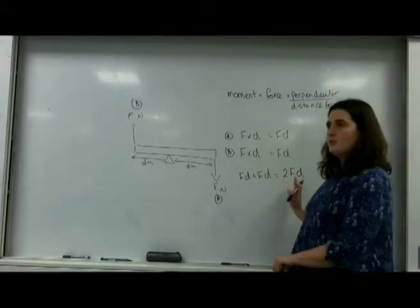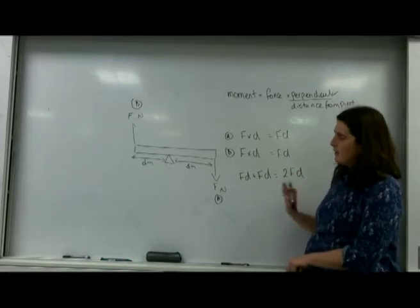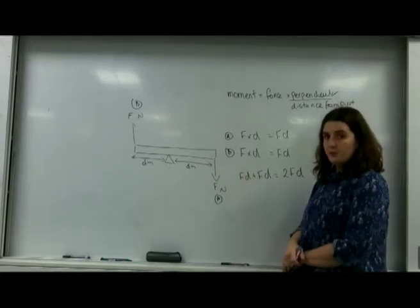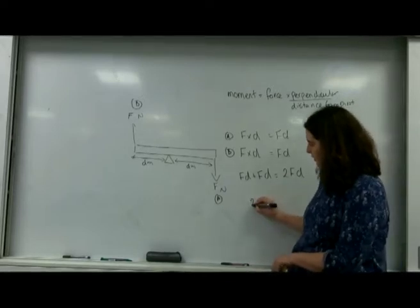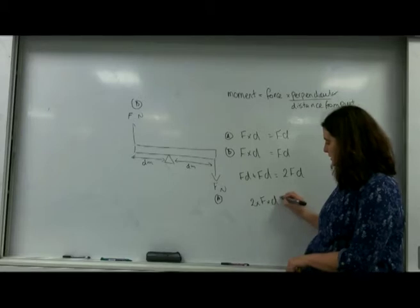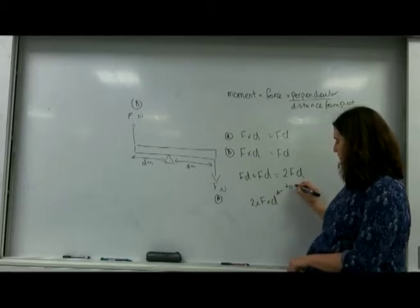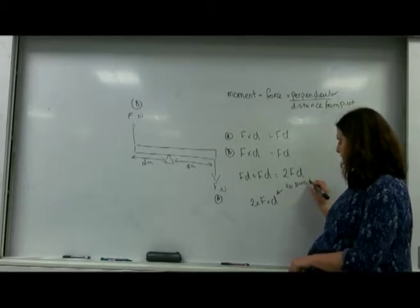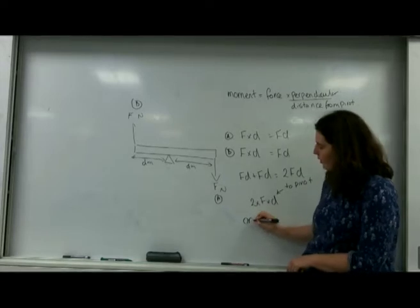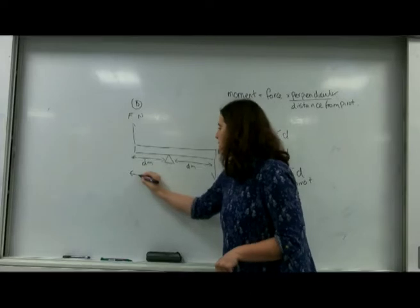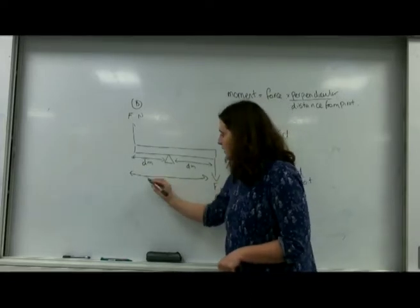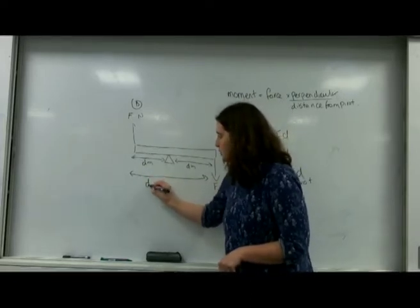You can use this formula to be able to generalize what a couple is: that it's 2 times the force times the distance to the pivot, or because these are the same.